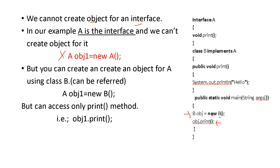But you can create an object for an interface with the help of the class. A is the interface, OBJ1 is the object, and this represents the class — with OBJ1 you can execute the method.